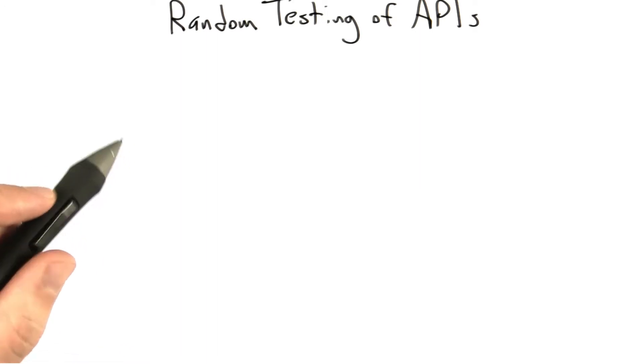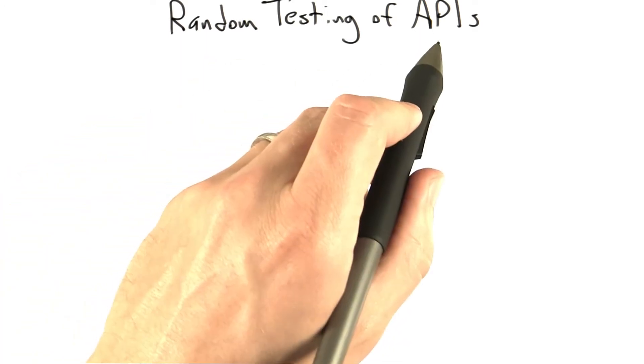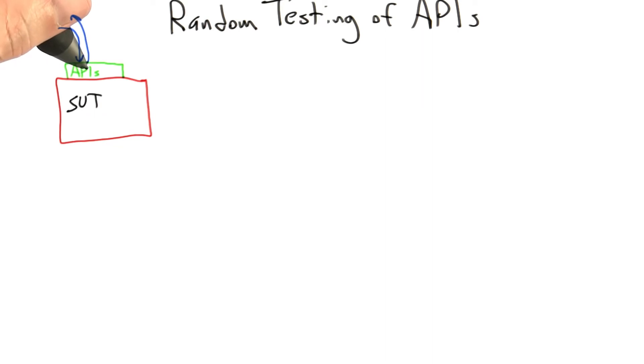What we're going to do now is look at the next level of structured inputs, and that level of structure is required for random testing of APIs. If you remember from our pictures earlier in the course, we have some software under test providing an API, or several APIs, for other code to use. It's this kind of APIs that we're going to focus on testing.